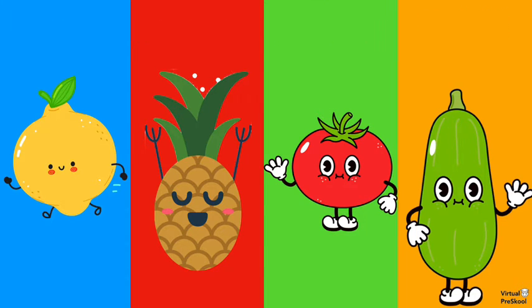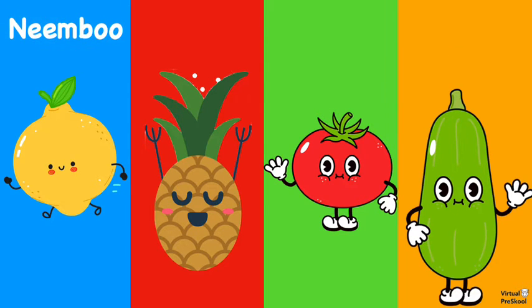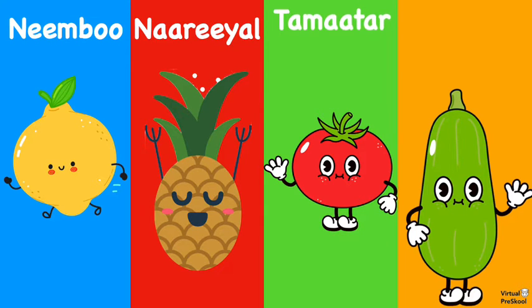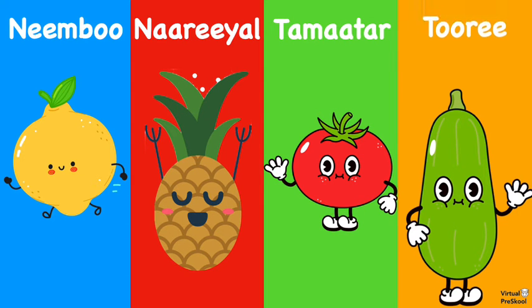Let's do those again. Lemon is nimbu. Coconut is nariyal. Tomato is tamatar. And zucchini is turi.